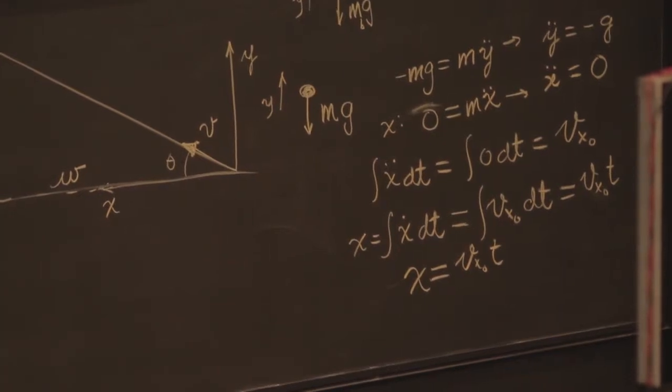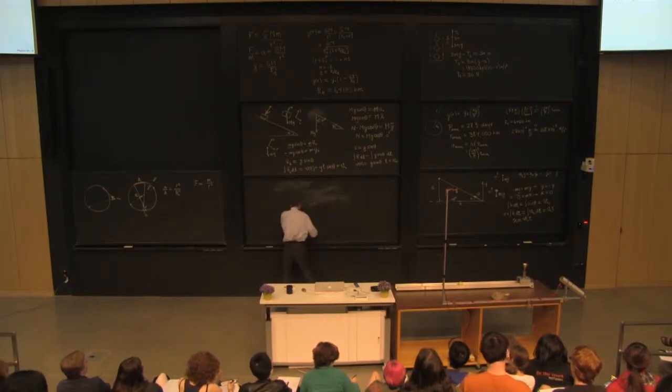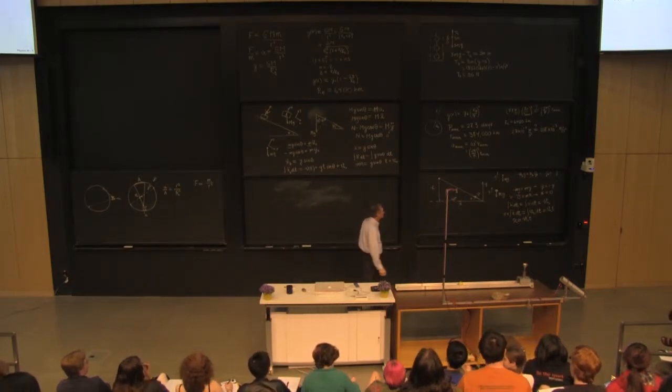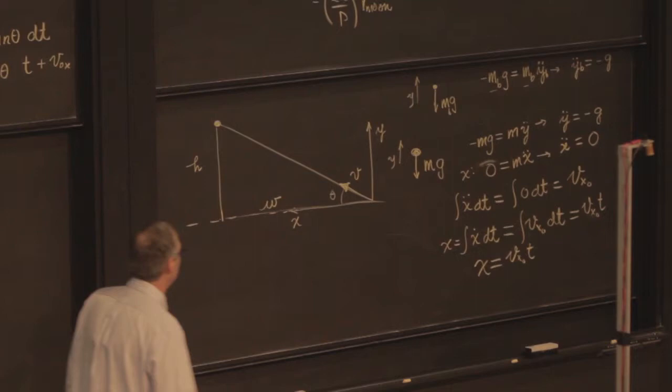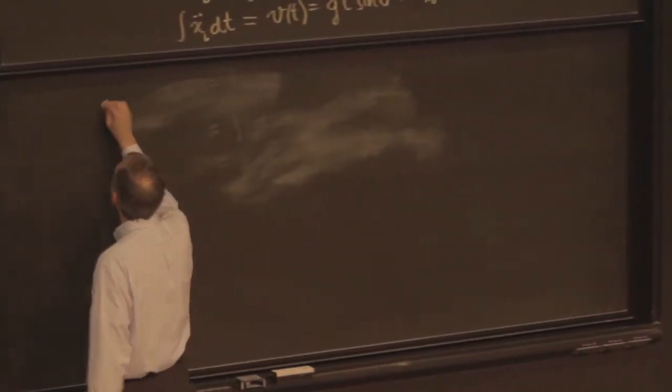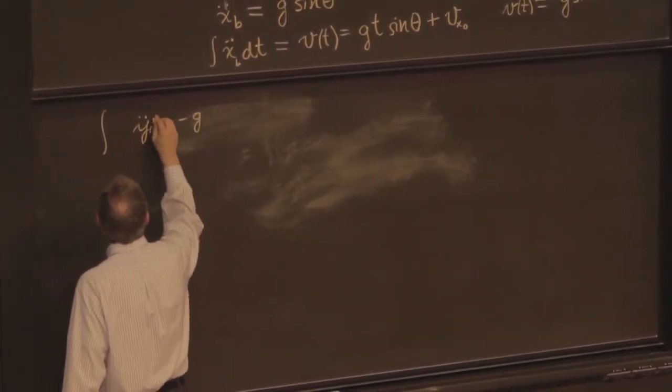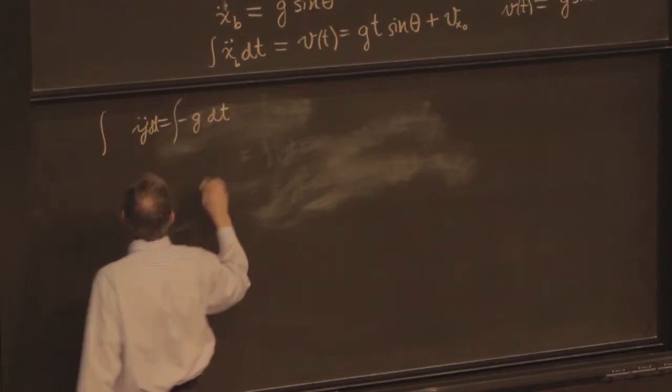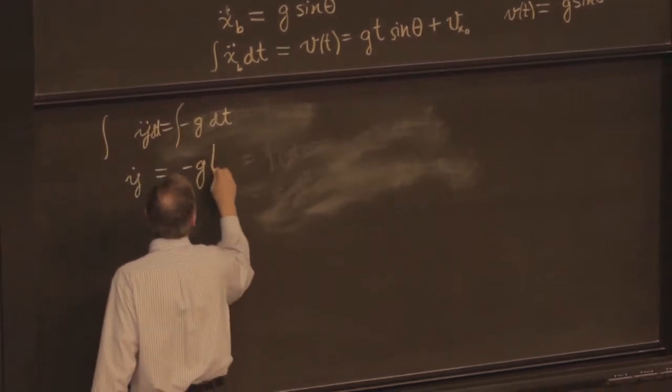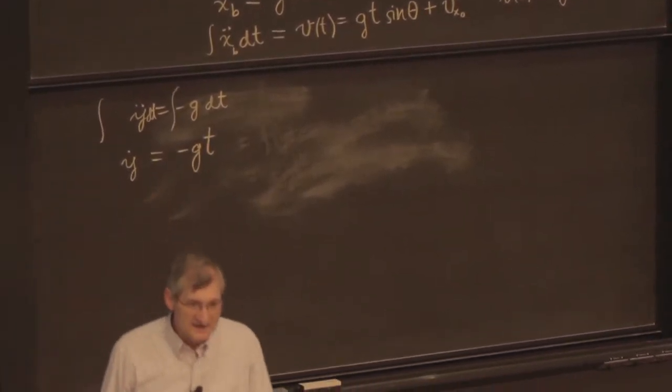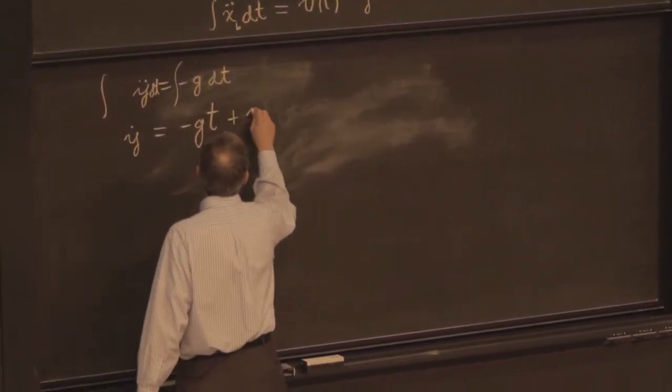Now let me integrate to find the y trajectory for the tennis ball. We start with y double dot is equal to minus g. So I integrate with respect to time. And I get y dot. That is the velocity is equal to minus g t plus whatever initial velocity I had. Right? And what is that? This is for the tennis ball. So it's v y0.